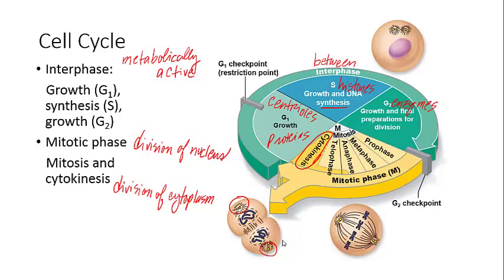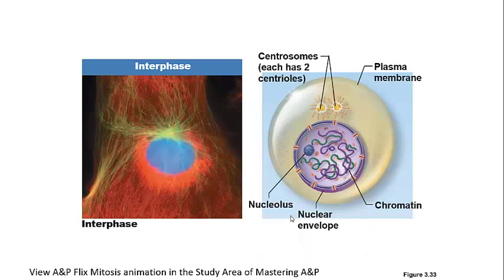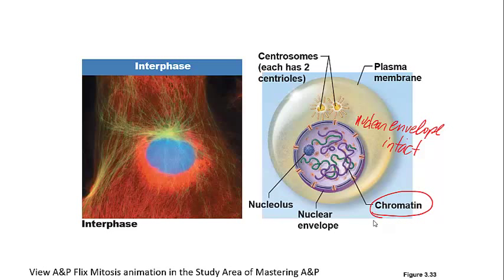Cell division is controlled by many different enzymes and chemicals, but the important thing to know is the major parts of the cell cycle. Looking at the interphase slide, the important thing to notice is that the nuclear envelope is still intact — it has not yet broken apart, which is what you'll see during mitosis. The chromatin is uncondensed DNA, and it will condense into chromosomes during mitosis. The centrosomes — each consisting of two centrioles — have not yet spread apart to the poles.